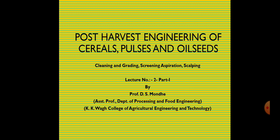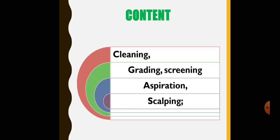So far we have covered two lectures of this course and in those particular lectures we studied about the various unit operations of agricultural processing. In this particular video lecture we will study about the various terms related with the cleaning operation. Cleaning is one of the unit operations of post-harvest engineering of cereals, pulses and oil soils. This is part one of the second lecture. In this particular video lecture we will study cleaning, grading, screening, aspiration and scalping.